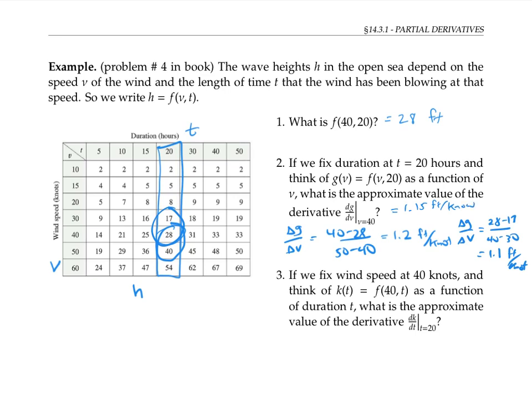The average of these two numbers is 1.15 feet per knot. And that gives us our best estimate of the rate of change of g, or in other words, the rate of change of f in the v direction when we hold t fixed at 20 hours.